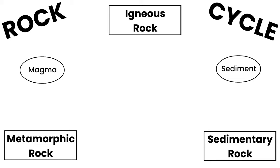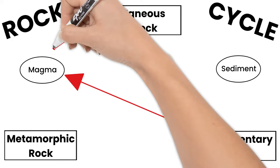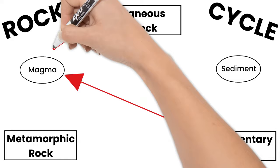Remember, magma is hot liquid rock. So it comes from rocks melting in extreme heat. All three types of rocks can melt into magma. So I'm going to draw arrows from all three to magma and label it melting as that is the process by which they become magma.